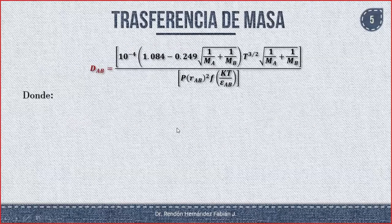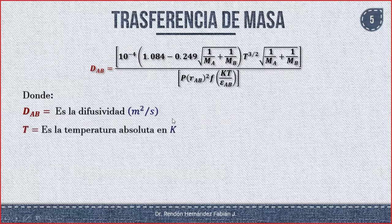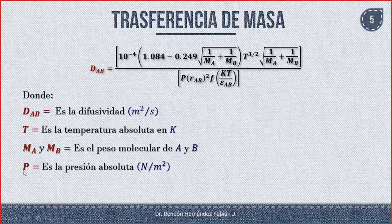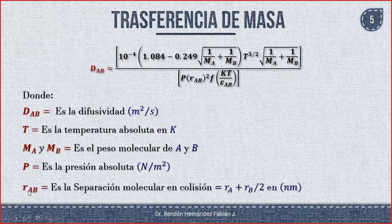La D_AB es la difusividad en metros cuadrados por segundo. T es la temperatura expresada en K. El peso molecular de A y B está expresado en kilogramos sobre kilomol. La presión es la presión absoluta expresada en pascales. R_AB es la separación molecular en colisión, igual a (R_A + R_B)/2, y estará en nanómetros.